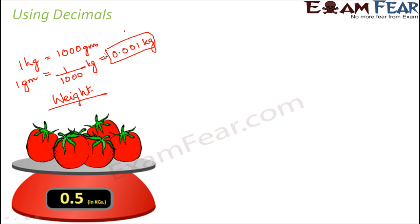So the moment you weigh things, sometimes it is 3.75 kgs, sometimes it is 0.5 kgs, sometimes it is 2.72 kgs. So we evidently use decimal numbers while weighing objects.